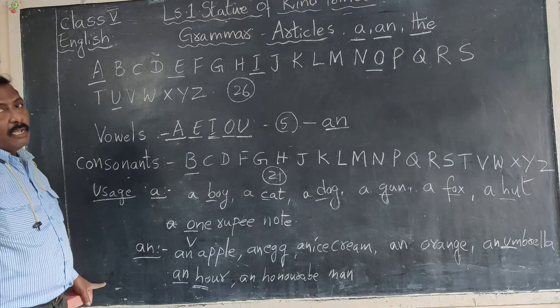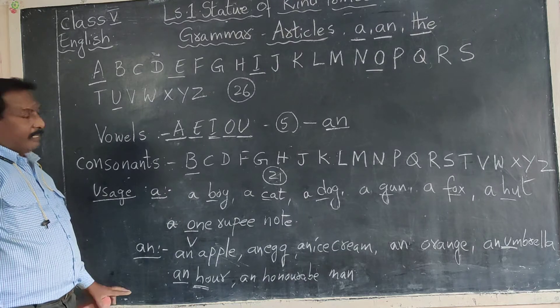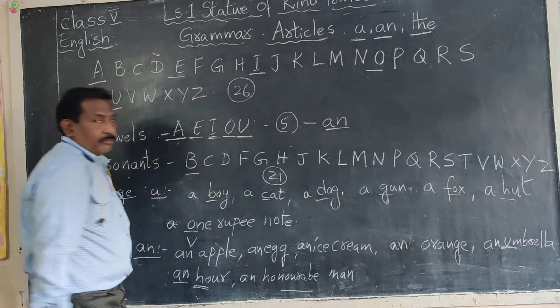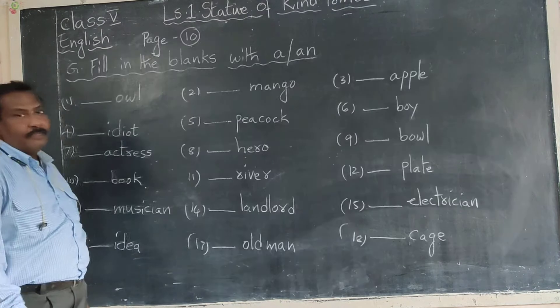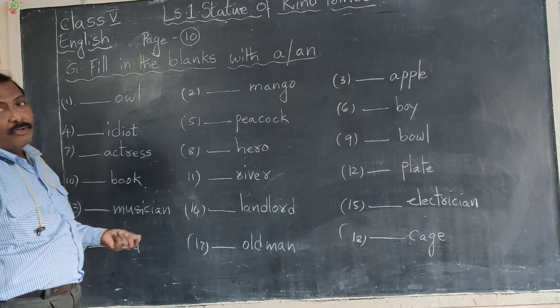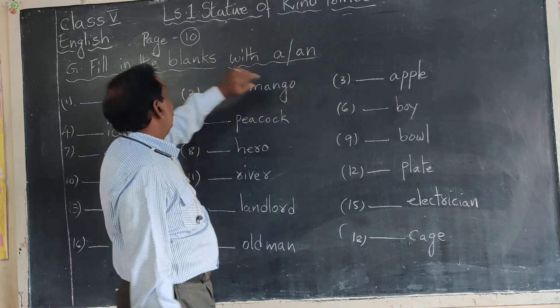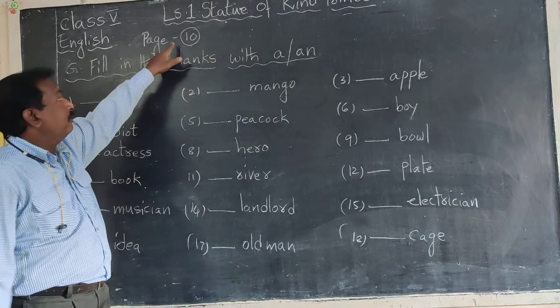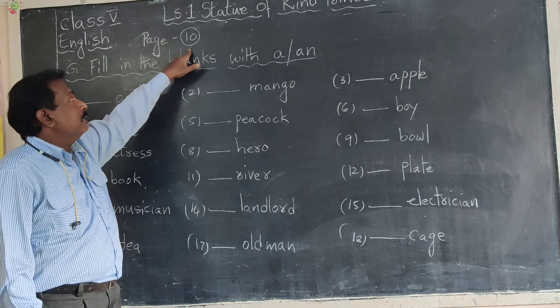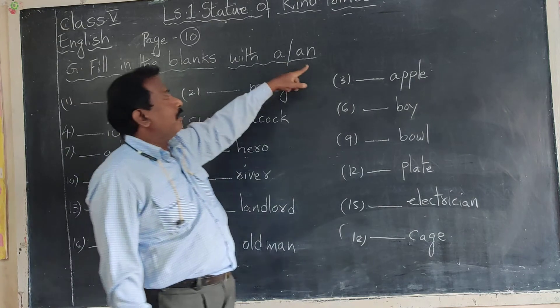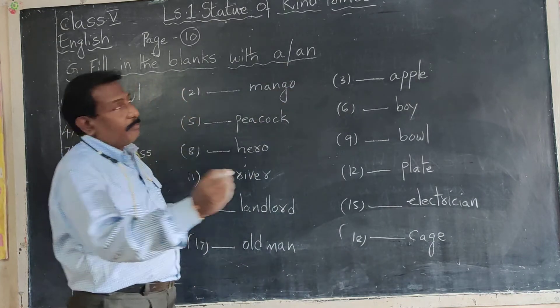In the next, we see the exercise. We do the exercise. Now we learn the rules, where to use A or An. Now take page number textbook 10. See, fill in the blanks with A or An.